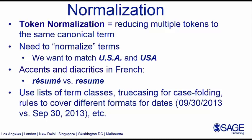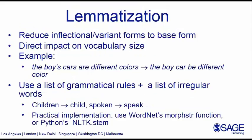Another step is lemmatization, which has to do with finding the root form of a word. For example, in 'the boys' cars are different colors,' we want to figure out that 'cars' is the plural of 'car,' or that 'are' is a form of the verb 'to be.' This is important because when we process text and find distributions of words, we want to account for different forms of the same word — like 'colors,' 'color,' or even the British spelling.